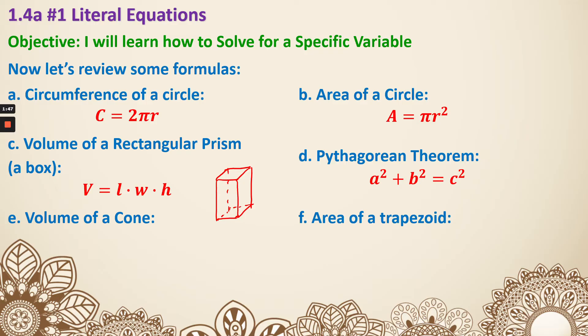Last two, volume of a cone. A cone is part of a cylinder, which is πr²h. The cone is part of it, so times by one third. And the area of a trapezoid. This is the trapezoid. The top is base 1. The bottom is base 2. And then we have a height.